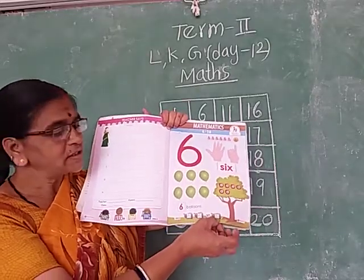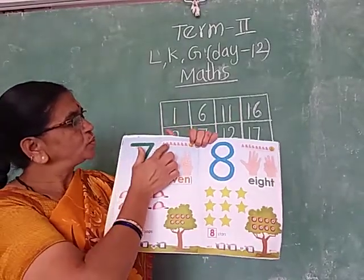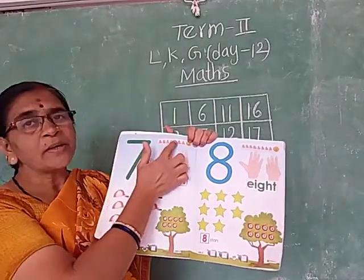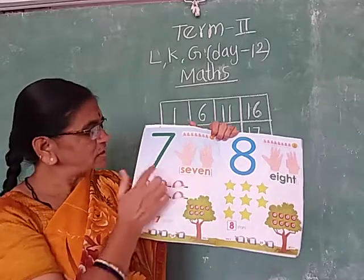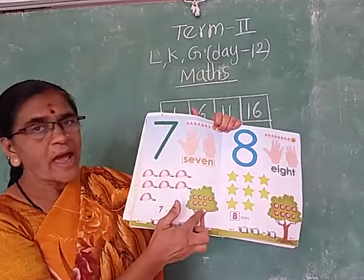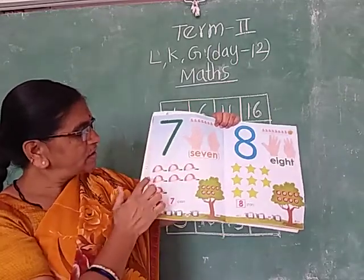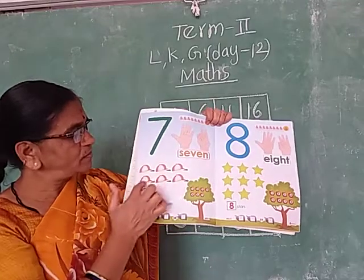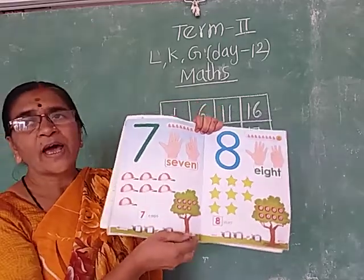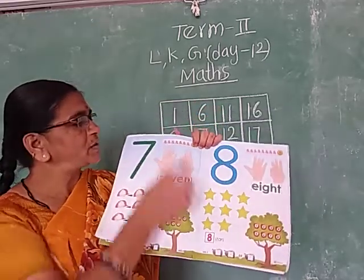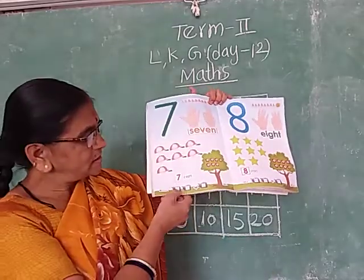6 butterflies, 6 fingers, 6 balloons, 6 apples. Number 6 is here. Next number: 7. 1, 2, 3, 4, 5, 6, 7 — 7 butterflies. 7 fingers. 7 caps. And 7 apples. What are these? These are caps. 1, 2, 3, 4, 5, 6, 7 — 7 caps. 1, 2, 3, 4, 5, 6, 7 — 7 apples on the tree.